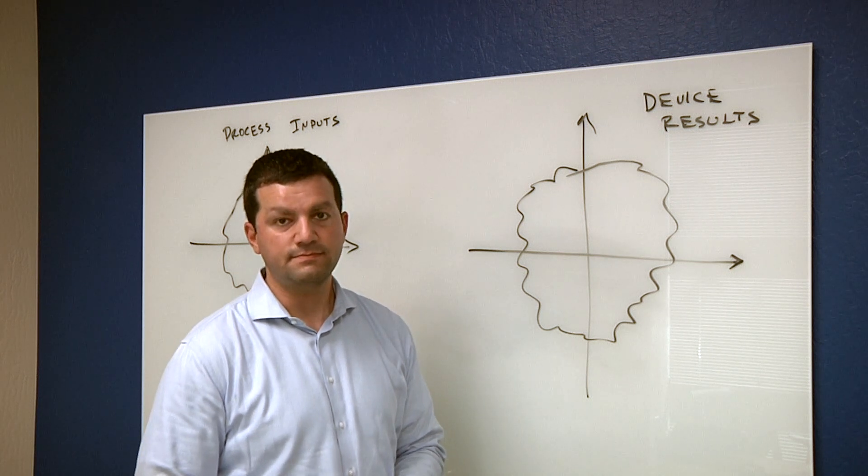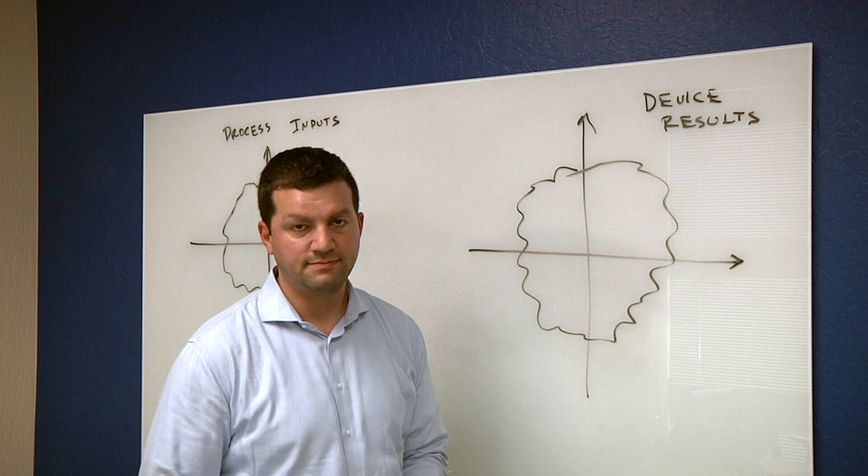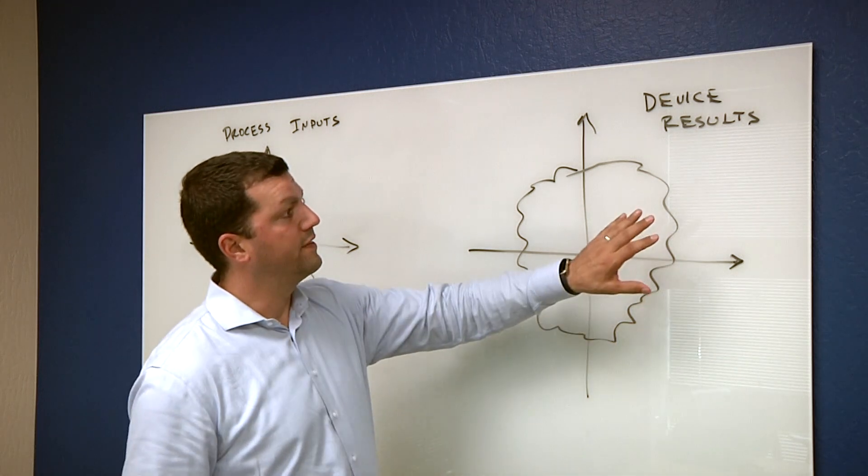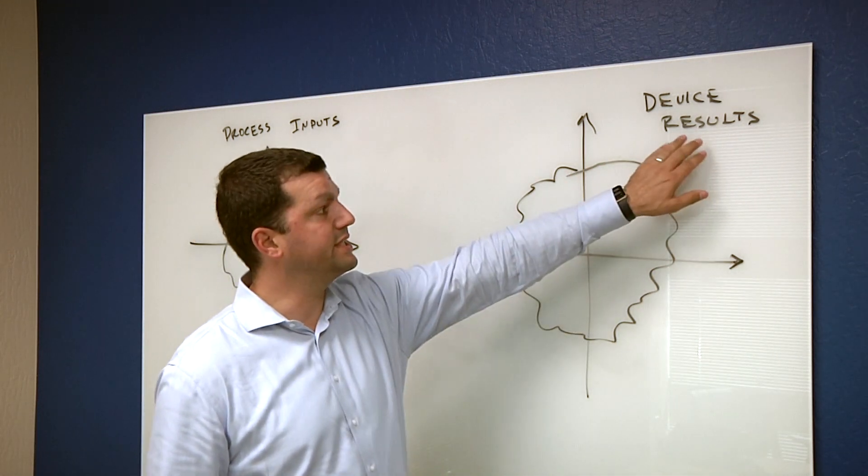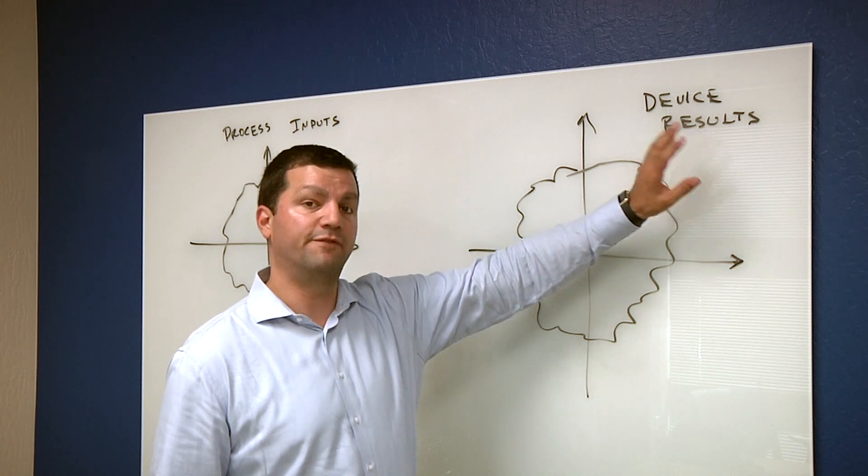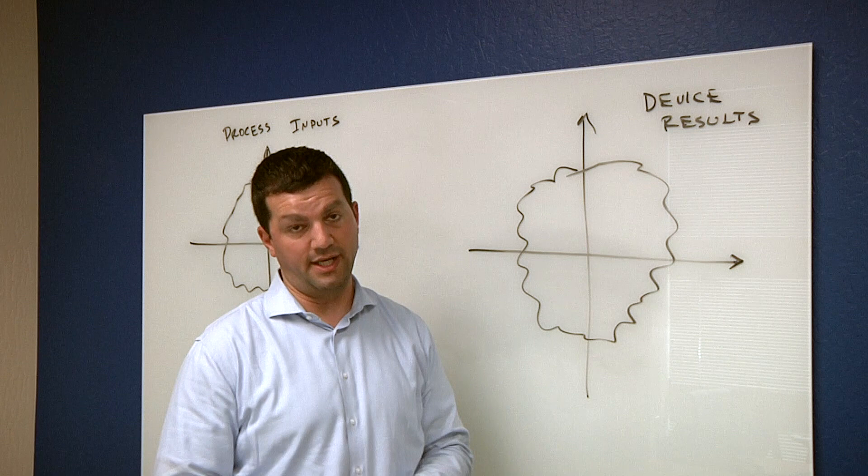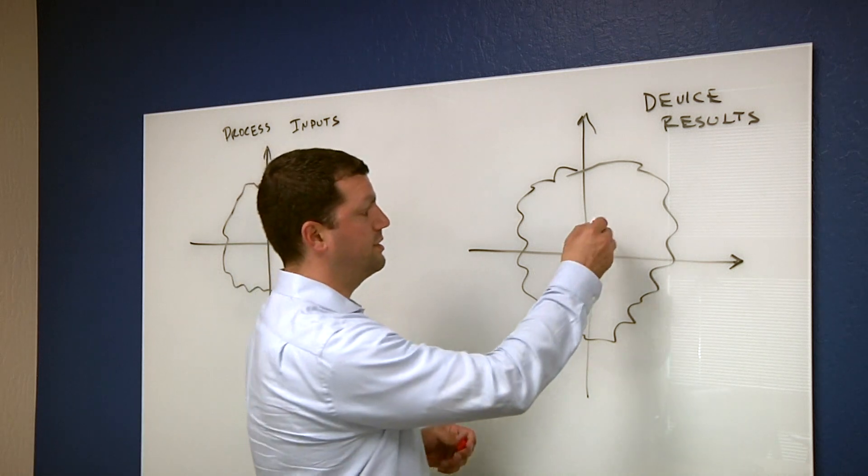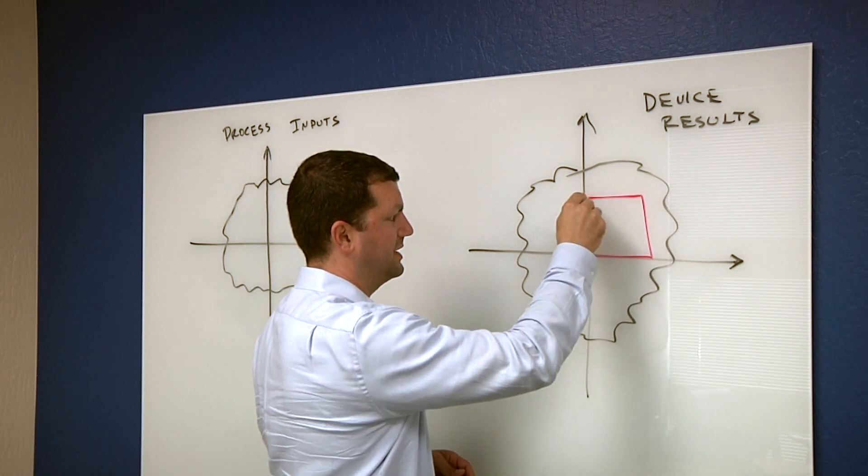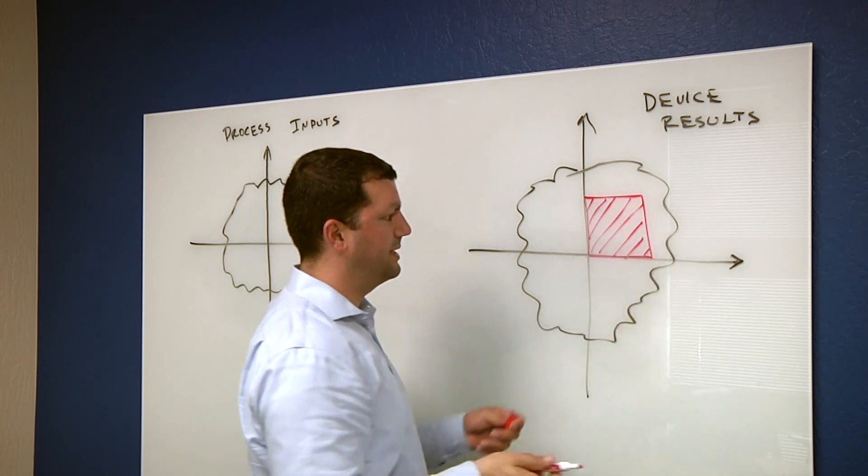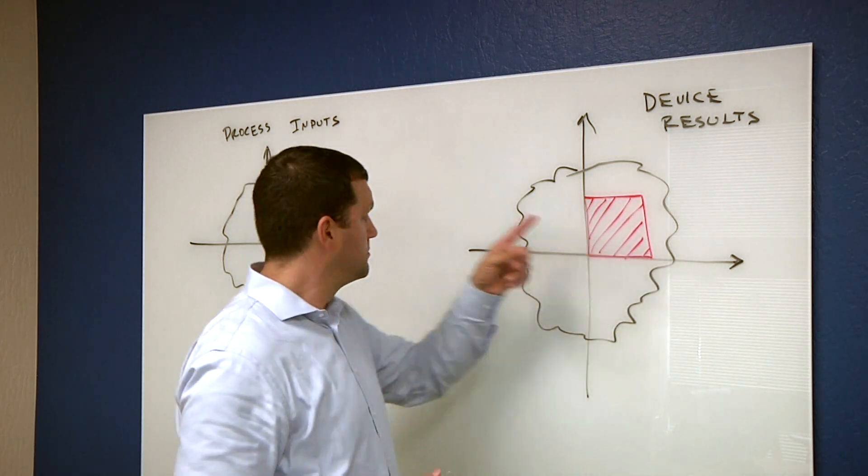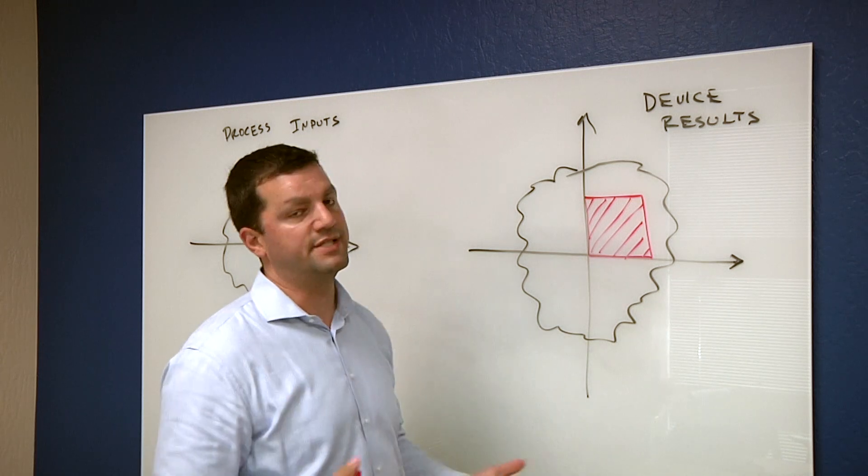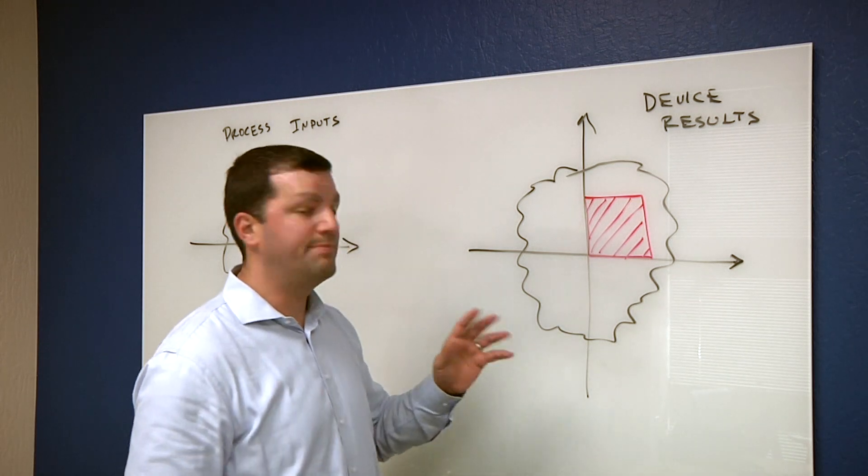And it's not just one type of processor that's being made anymore, right? Now you have completely new architectures that are coming out for things like artificial intelligence and machine learning. Absolutely. So the different type of product that you're trying to produce really sets what specs you're trying to hit over here. And you may want to be in a different space in the device results depending on the product. So if you choose, based on your product, that you want your device results to end up in maybe this region of the cloud, again, I'm drawing this in simple two dimensions, you have to figure out what process inputs do I want to set to land as many results as possible over here. Again, as this has become a very highly dimensional problem, that becomes very difficult.